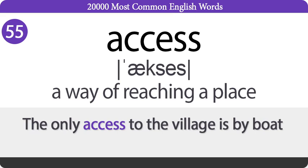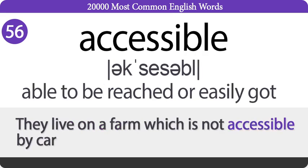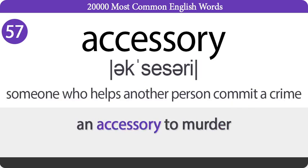Access: A way of reaching a place. The only access to the village is by boat. Accessible: Able to be reached or easily got. They live on a farm which is not accessible by car.